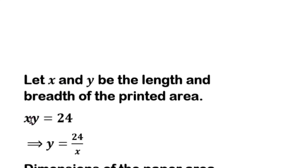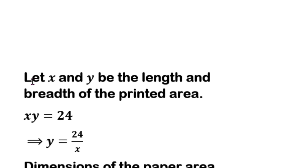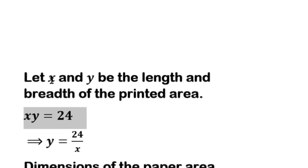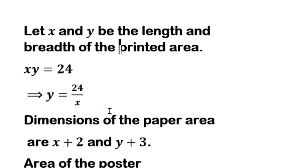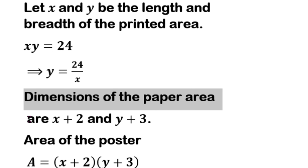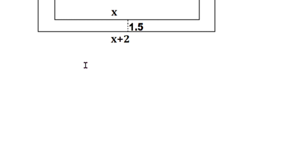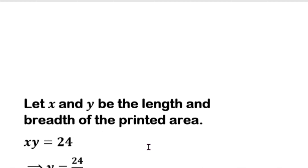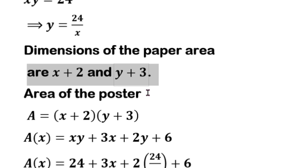Let x and y be the length and breadth of the printed area. The printed area is the main area of 24 cm². So the printed portion area is x times y equals 24.